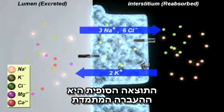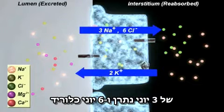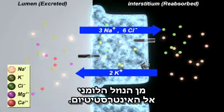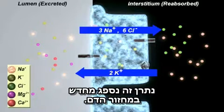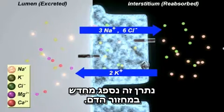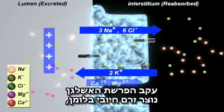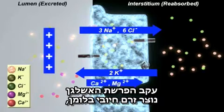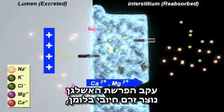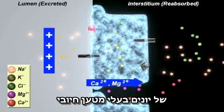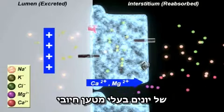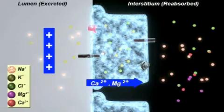The net result is a continuing transport of three sodium ions and six chloride ions from the luminal fluid into the interstitium. This sodium is reabsorbed into the circulation. Because of the secretion of potassium, a positive voltage is generated in the lumen, resulting in reabsorption of positively charged ions through the paracellular junction.